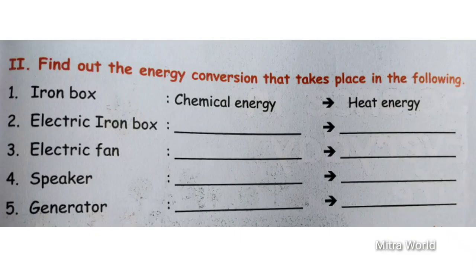Next, Roman numeral 2 — find out the energy conversion that takes place in the following. First one: iron box. In an iron box, chemical energy is converted into heat energy.